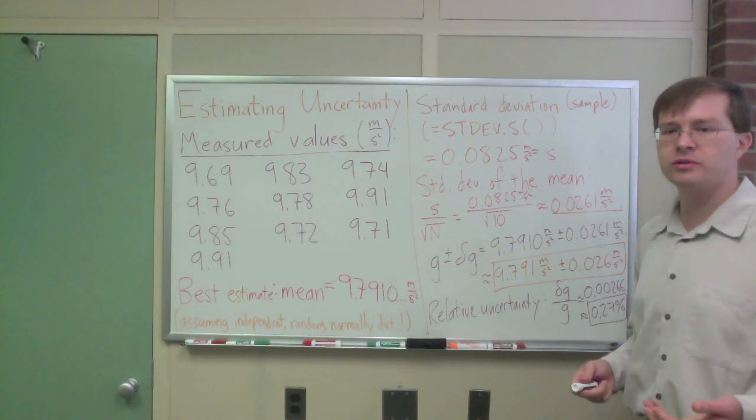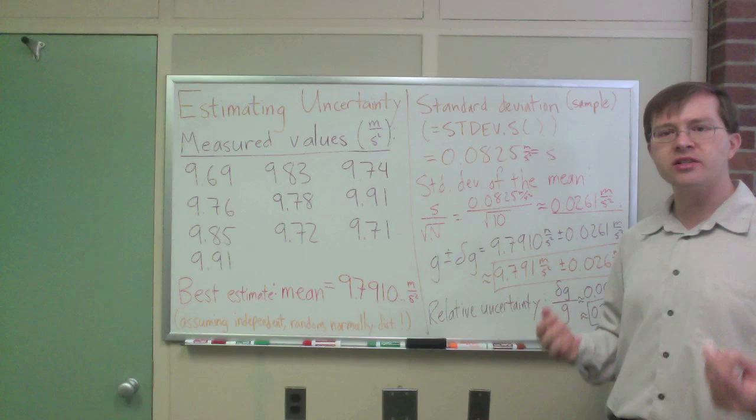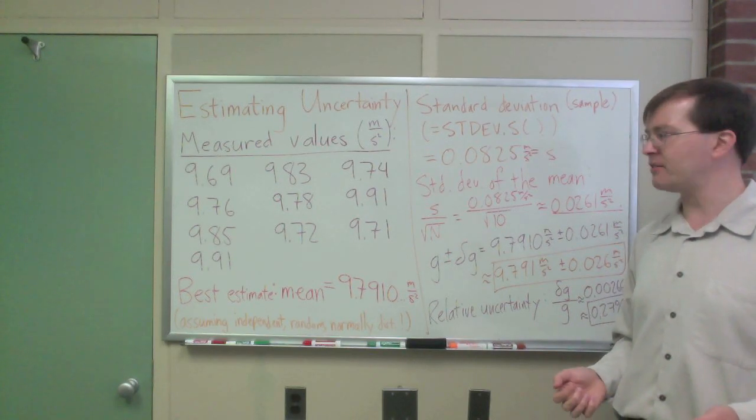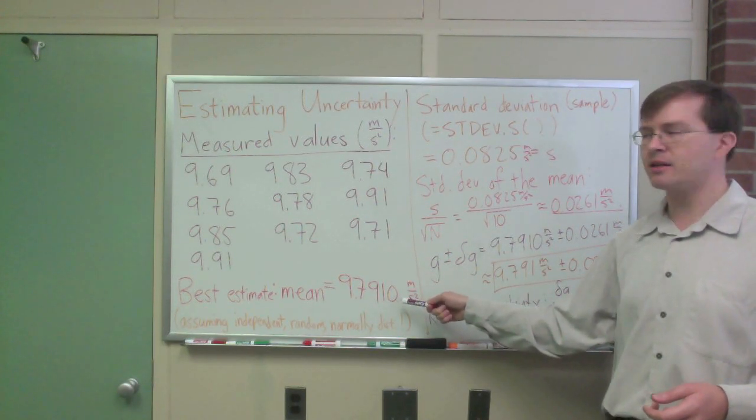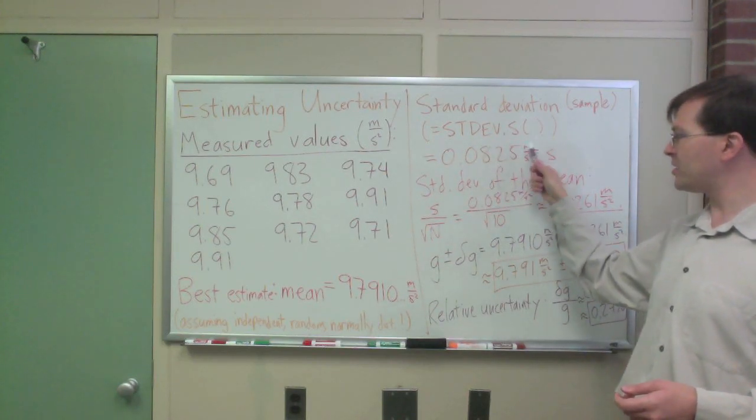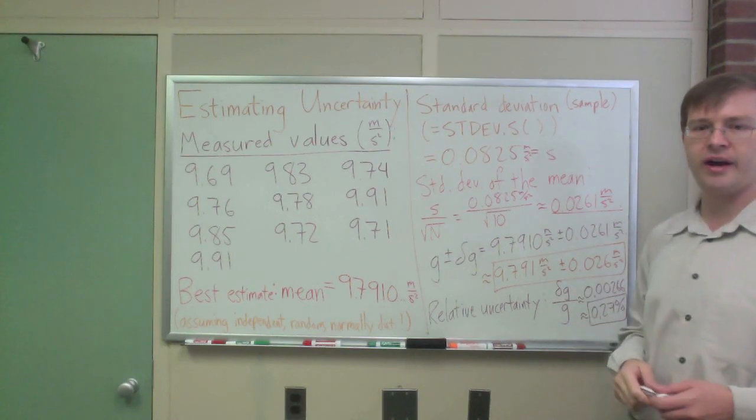That's how you take a set of measurements of the same quantity and figure out what value and uncertainty to report for that set of measurements. You take the mean to find the best estimate. And then you take the standard deviation, divide by square root of n, get the standard deviation of the mean to find your actual value.